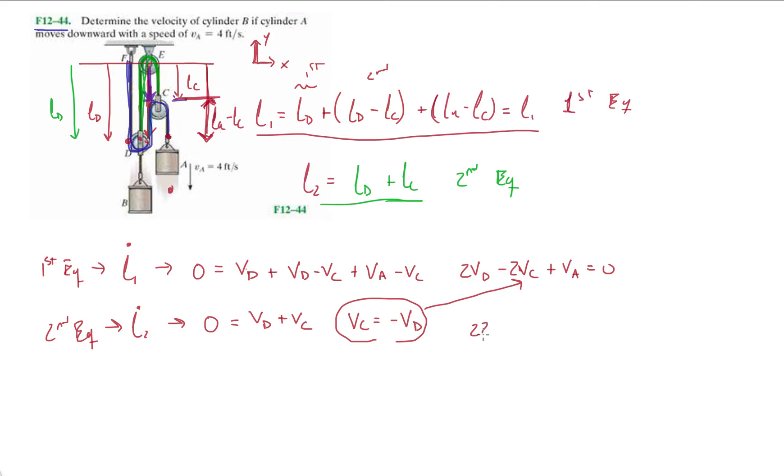This results in two vd minus, well, minus two plug in the minus vd in there plus va. And then we have four vd equals va. That's a negative va. Okay.